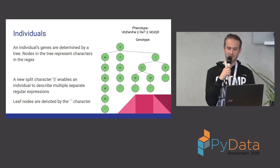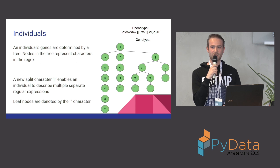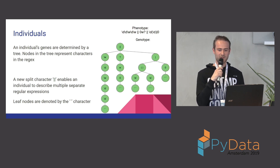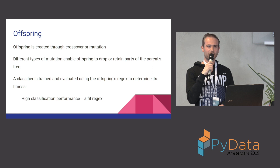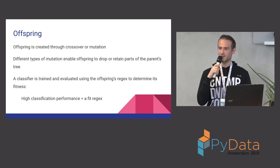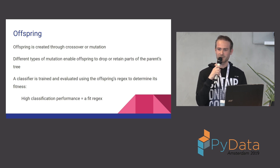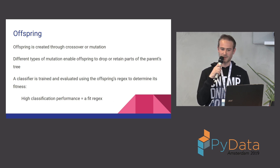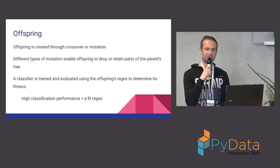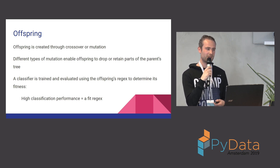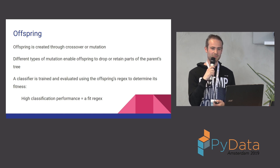We use the quotation marks as leaf nodes to indicate that a path down the tree ends. To create offspring, we can do crossover or mutation — these are two different methods. When you want to make a new individual, there's a random probability of choosing either crossover or mutation. We also implemented multiple types of mutation that enable offspring to either keep or drop parts of the parent's tree.